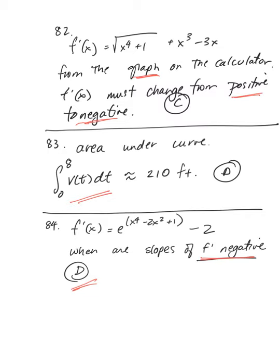In number 82, we're given a complicated expression for F prime: square root of x to the 4th plus 1 plus x cubed minus 3x. I graph that in the calculator and see where it changes from positive to negative — that happens at 0.350, or choice C. In number 83, we're finding total distance traveled, which is the area underneath the velocity curve from 0 to 8. Estimating by counting squares — each square has height 10 and base 1 — we get 210 feet.